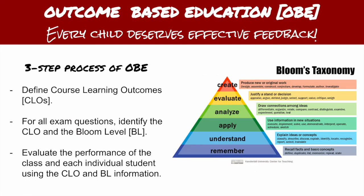OBE is basically a three-step process. The first step is to define the course learning outcomes for each course at the beginning of the semester or academic year. Then, when the exams are conducted, for all the exam questions, the teacher needs to identify the CLO and the Bloom's taxonomy level. Finally, after the exam is over, the teacher needs to evaluate the performance of the class and each individual student using the CLO and Bloom's taxonomy information.